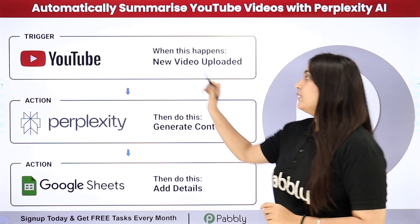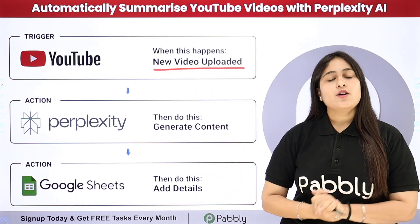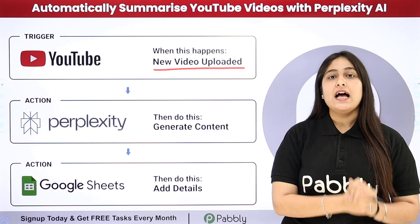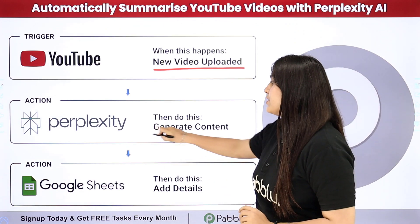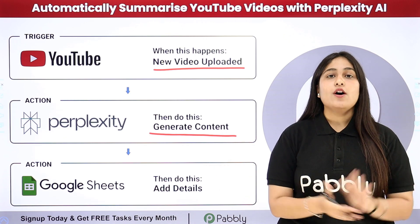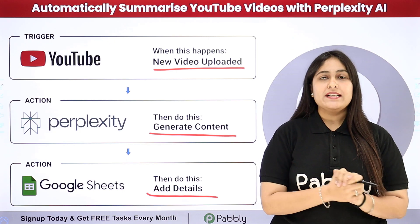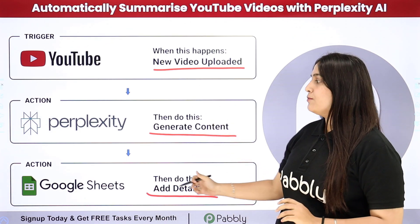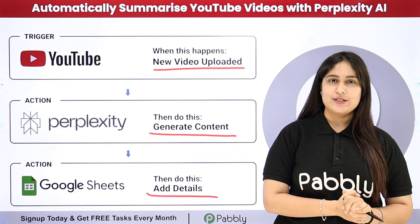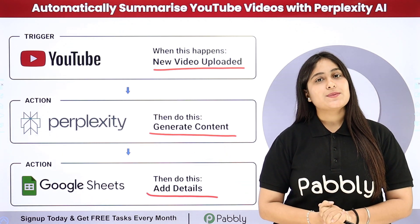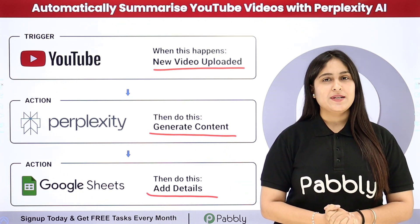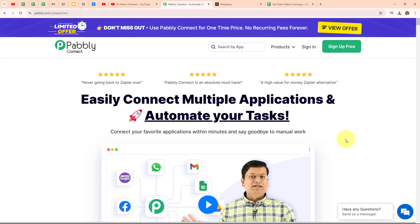Whenever a new video is uploaded on my YouTube channel, automatically using that video URL and the title, a new summary should be generated using Perplexity AI, and after that the content generated should be added in my Google Sheets as a new row. To automate this entire process I need to build a connection between these applications using an automation software named Pabbly Connect.